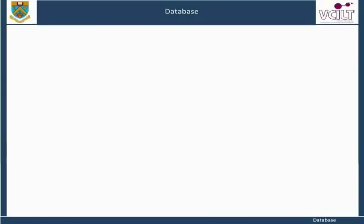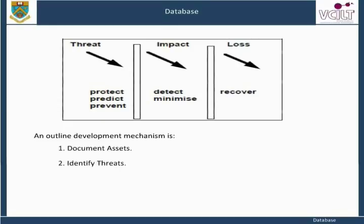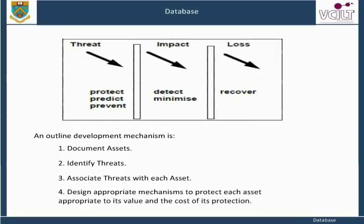An outline development mechanism is to: document assets, identify threats, associate threats with each asset, design appropriate mechanisms to protect each asset appropriate to its value and the cost of its protection, detect a security breach against each asset to minimize losses incurred, and recover normal operation.